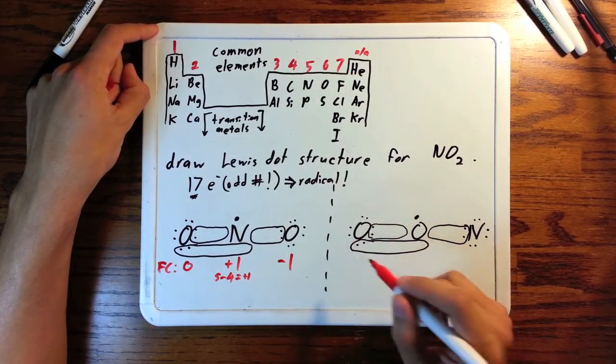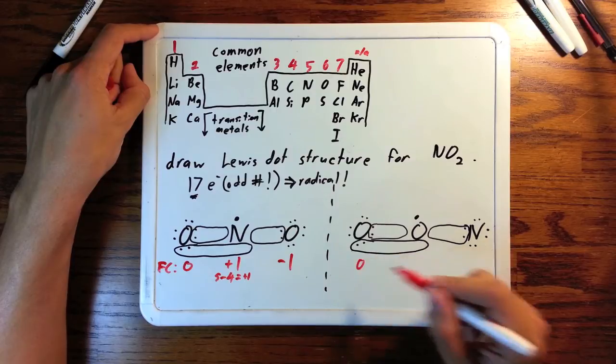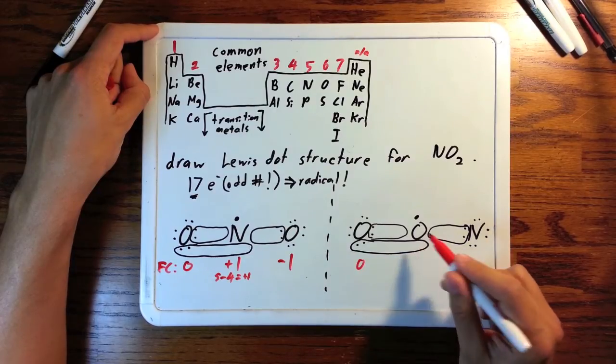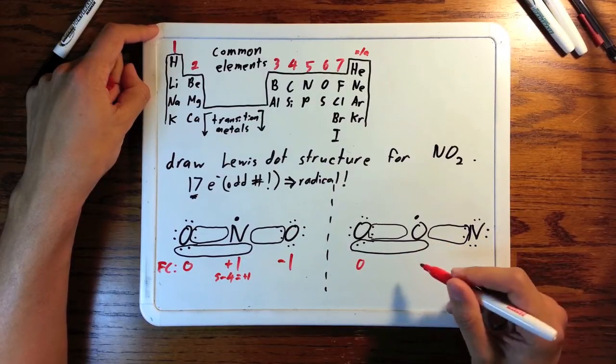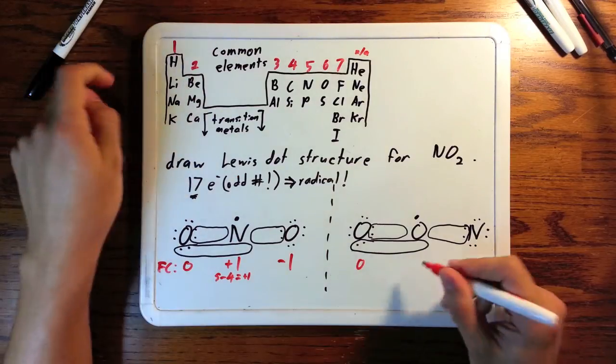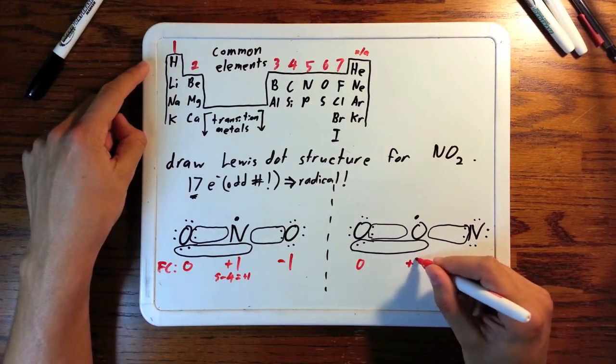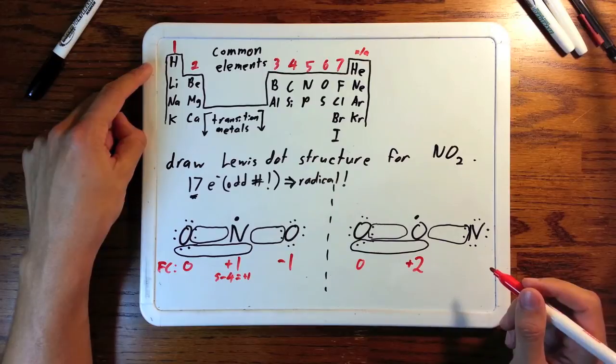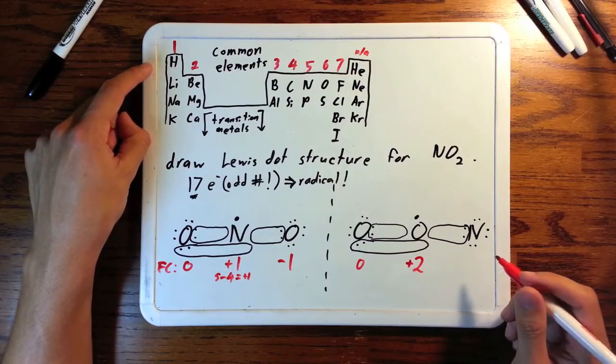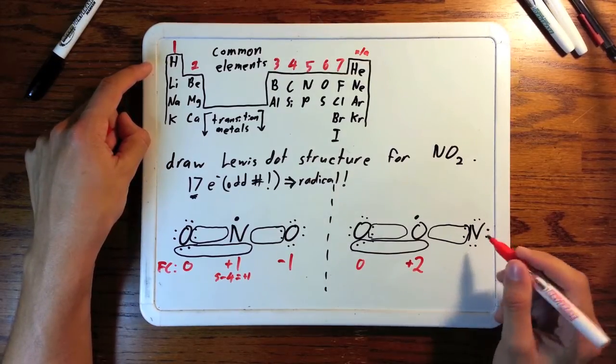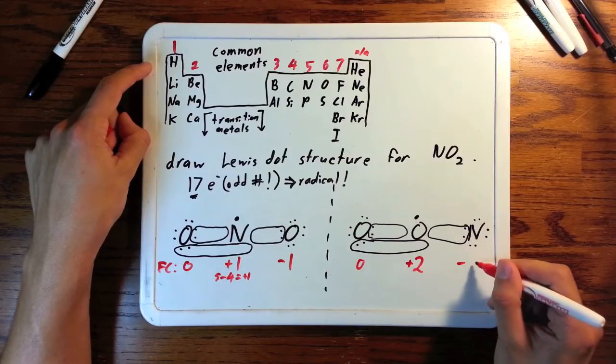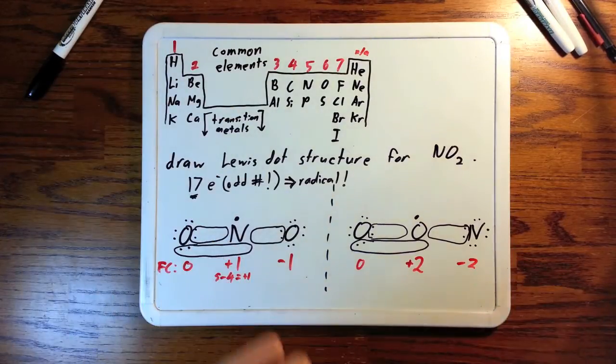On the next structure, oxygen with a full octet and two bonds. That's always 0. In the middle we have something odd. We have oxygen, which is 6, minus 3 bonds and one electron. That's 6 minus 4, positive 2. Lastly, we have nitrogen with one bond. So it's 5 minus 2, 4, 6, plus the bond is 7. 5 minus 7, negative 2.